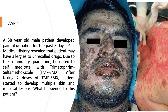To guide our discussion today, we're going to have two cases. For the first case, a 30-year-old male patient developed painful urination for the past three days. Past medical history revealed that the patient may have allergies to unrecalled drugs. Due to the community quarantine, he opted to self-medicate with trimethoprim-sulfamethoxazole, or TMP-SMX. After taking two doses, the patient started to develop multiple skin and mucosal lesions as shown in the picture. What happened to this patient?